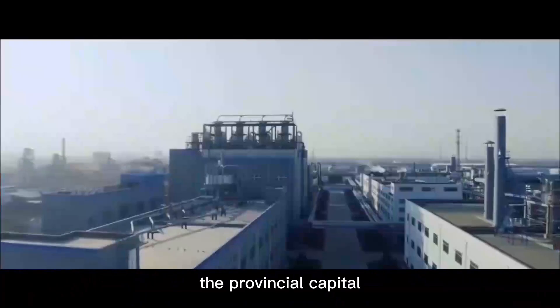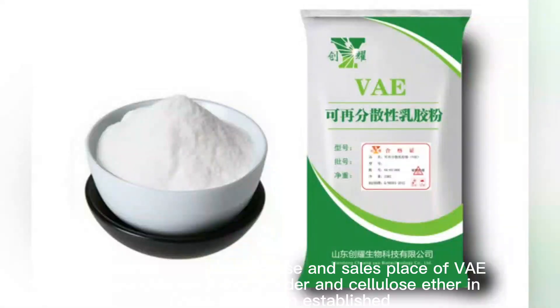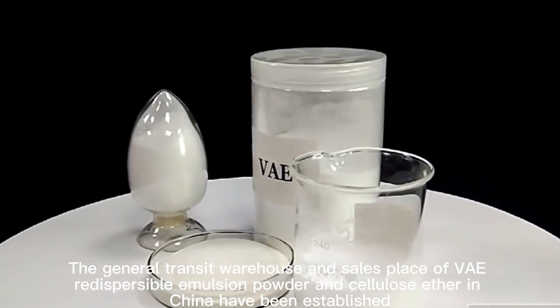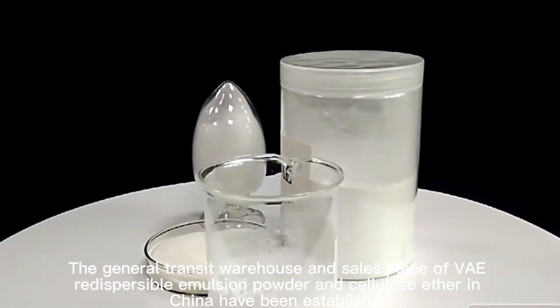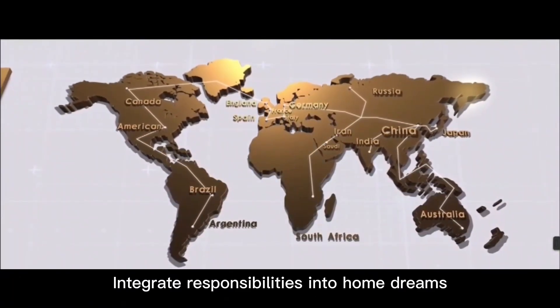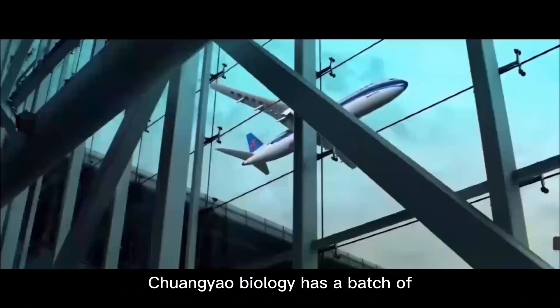The company was established in Jinan, the provincial capital, in 2017. The general transit warehouse and sales place of VAE redispersible emulsion powder and cellulose ether in China have been established. Integrate responsibilities into home dreams. After years of development, Chuang Ya Biology has...